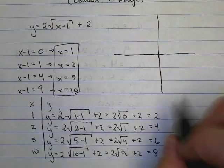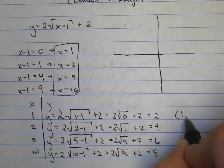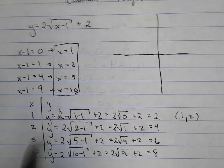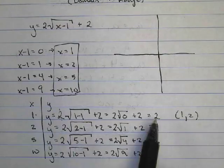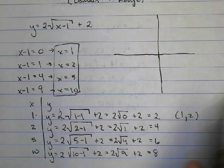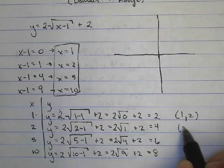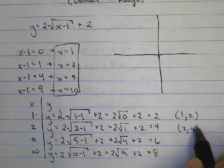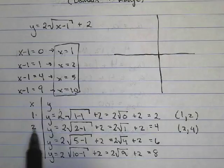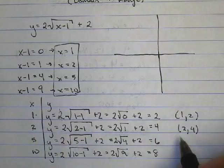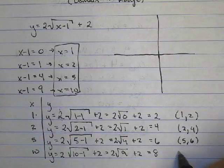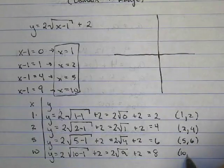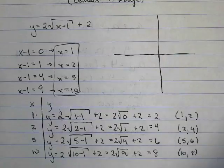We have the point (1, 2): x is 1, y is 2. We have the point (2, 4): x is 2, y is 4. Then (5, 6) and (10, 8). Now we're ready to graph.